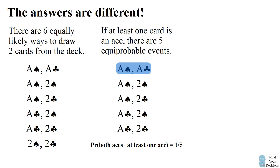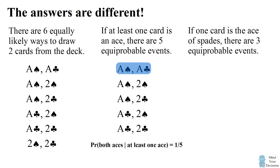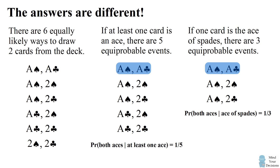What would happen if you knew you drew the ace of spades? In that case, the ace of spades could be paired with any of the other three cards — there are three equally likely events. Exactly one of those has a pair of aces, so the probability is one divided by three. It's surprising that the detail that you drew the ace of spades actually affects the probability. The conditional probability is affected because your knowledge is different in these two different circumstances.